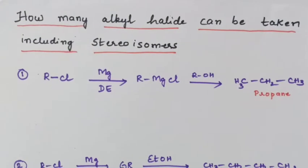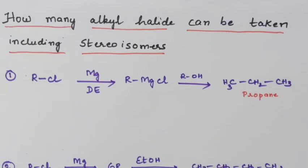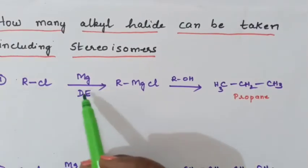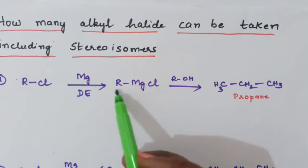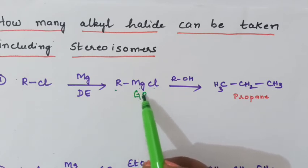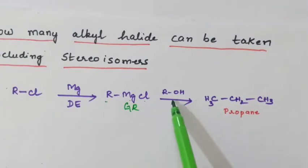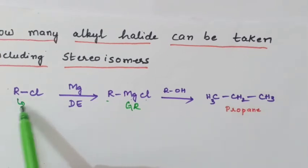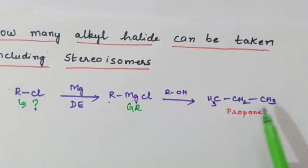Next, we are going to study how many alkyl halides can be taken — including stereoisomers — to give a particular product. A reaction will be given: an alkyl halide treated with magnesium in dry ether forms a Grignard reagent (alkyl magnesium chloride), which is then treated with alcohol to give a product such as propane. You need to find which R group — that is, which alkyl halide — should be used to get that product.